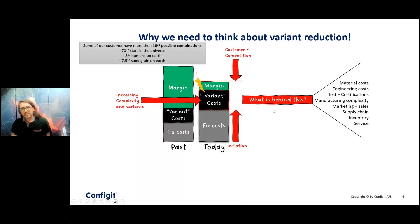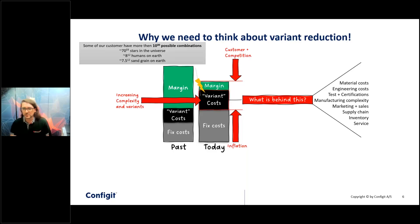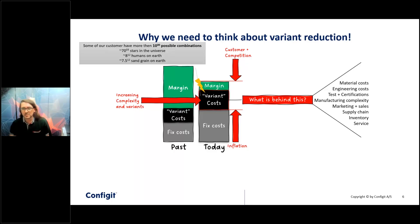What is behind variant costs? There are the different additional materials for different variants, engineering costs to develop the product in variants, testing and certification — for example, if a car has two or three engines you also have to certify each one and do crash tests. Then there is manufacturing complexity, which is very different if you have a factory for one variant versus a product with 100 variants. Marketing, sales, supply chain, inventory, and service all impact the cost of variants.